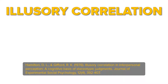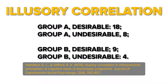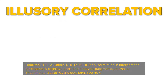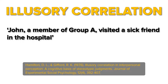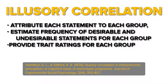Today I will tell you about early studies that showed how illusory correlation is involved in creating stereotypes. David Hamilton and Robert Gifford provided a proportionally similar number of desirable and undesirable statements about people from group A and group B. However, the absolute number of statements of each type were different. Participants read statements like 'John, a member of group A, visited a sick friend in the hospital' — an example of a desirable statement. Later, they asked participants to attribute each statement to each group, estimate the frequency of desirable and undesirable statements for each group, and provide trait ratings for each group.